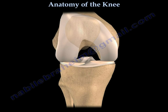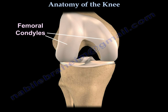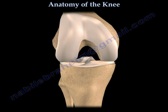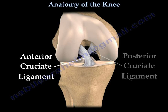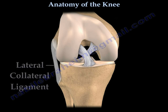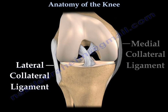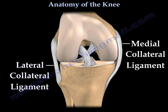Here you can see the femoral condyles, the meniscus, the anterior cruciate ligament, the posterior cruciate ligament, the lateral collateral ligament, and the medial collateral ligament.